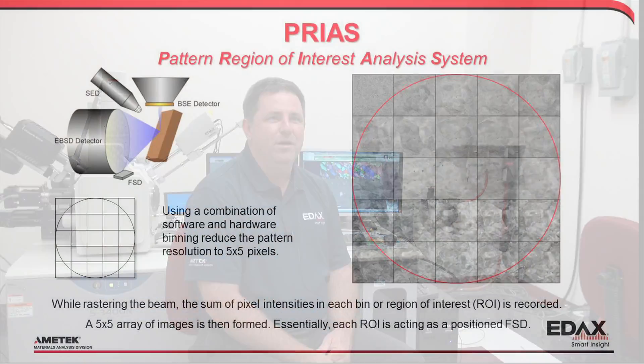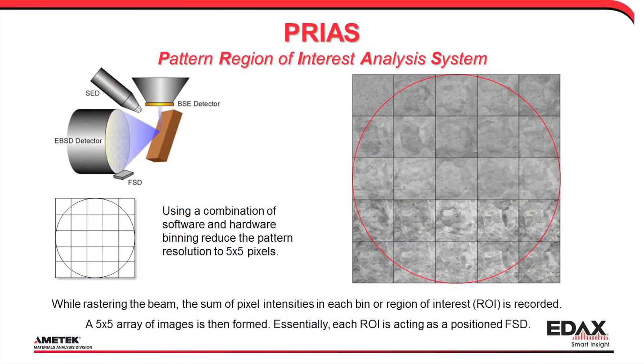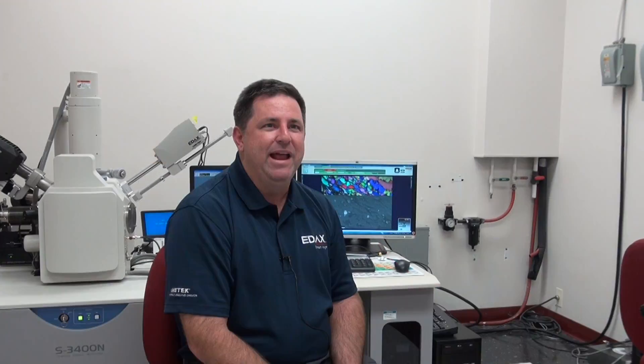Through a novel use of the EBSD camera, PRIUS provides 25 positional electron detectors to quickly characterize materials and provide unprecedented flexibility in image collection and visualization. PRIUS imaging simultaneously detects multiple contrast mechanisms, including orientation, atomic number, and topographic contrasts.